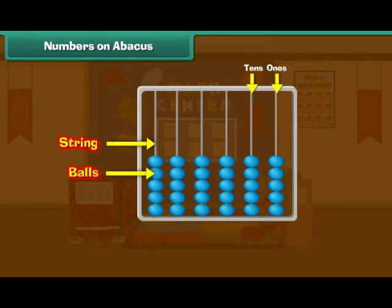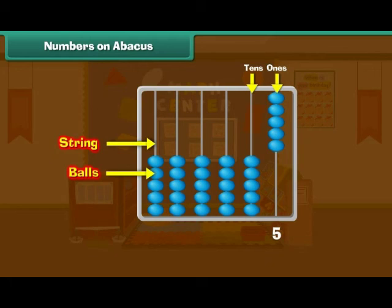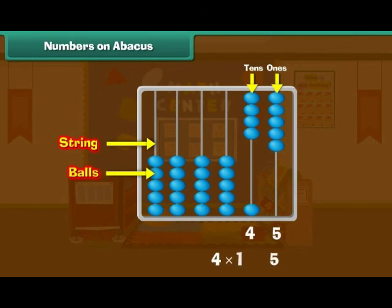Look at this abacus. It has five balls in the ones place and four balls in the tens place. Therefore, the number is 45.